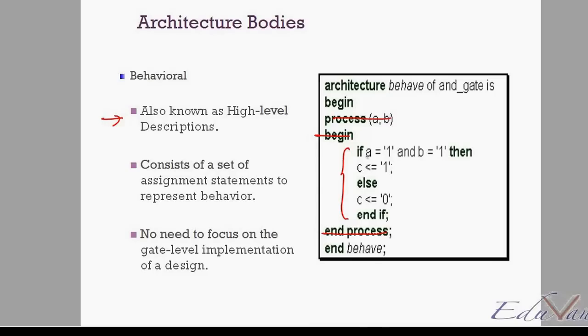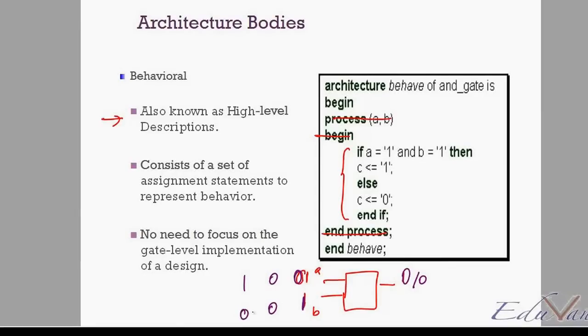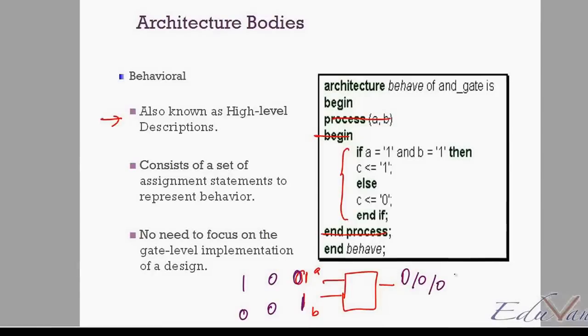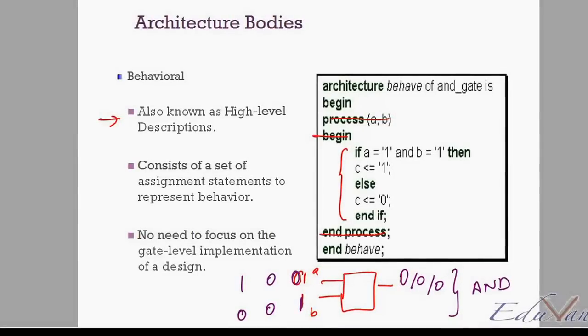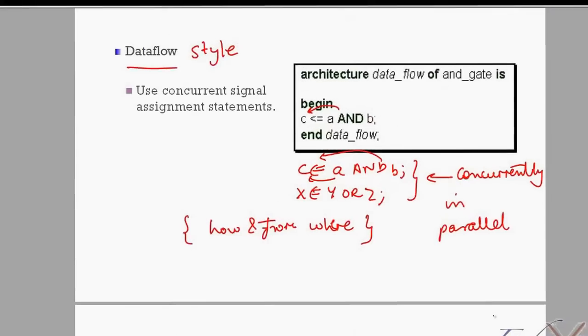So if A is equal to 1 and B is equal to 1, then my C should be 1, else my C should be 0. So basically what I am trying to say I have a circuit which says that if A is 1 and B is 1, then my output C should be 1, else in any other condition, for example if A is 0 and B is 1, then my output is 0, or A is 0 or A is 1 B is 0, output is 0.